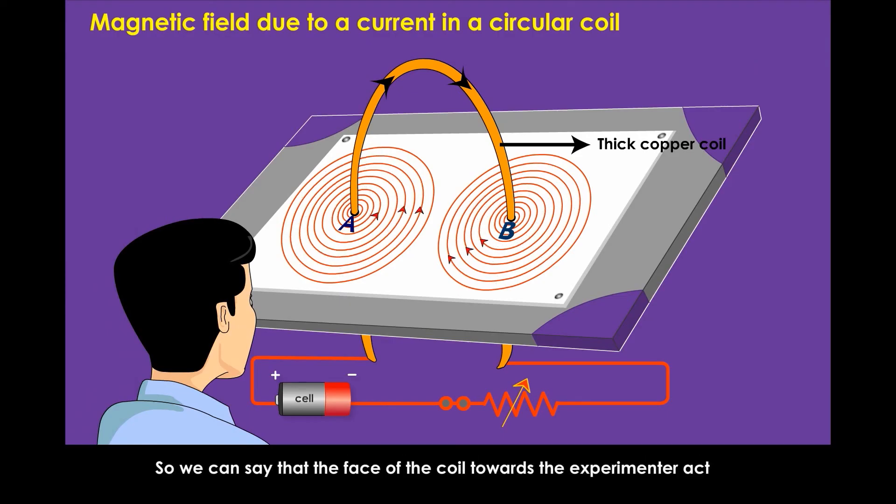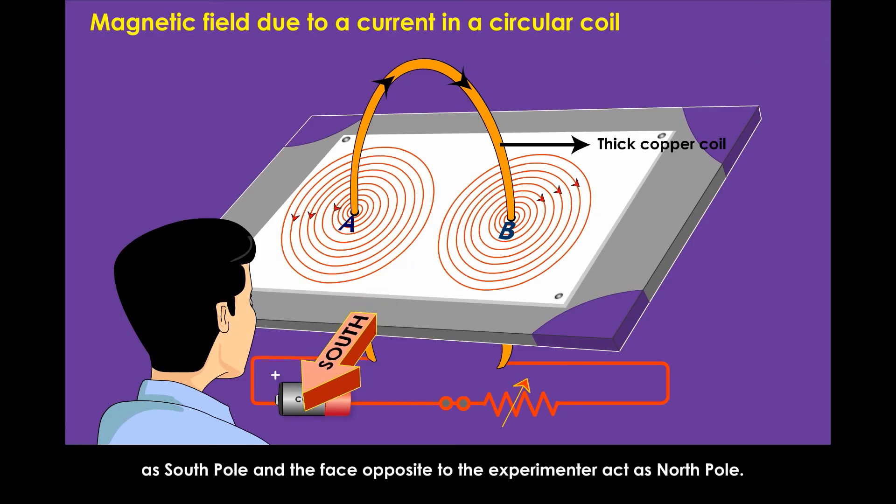So we can say that the face of the coil towards the experimenter acts as south pole and the face opposite to the experimenter acts as north pole.